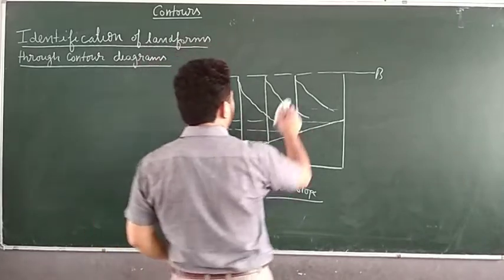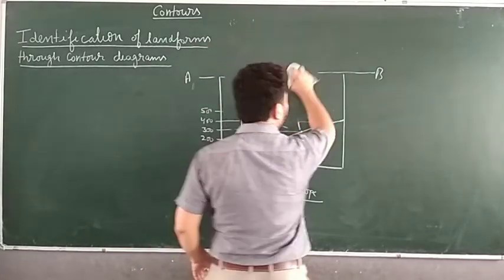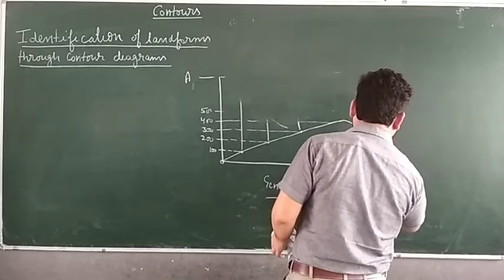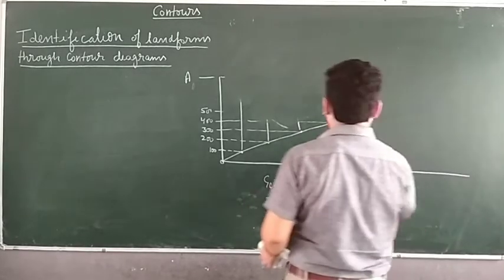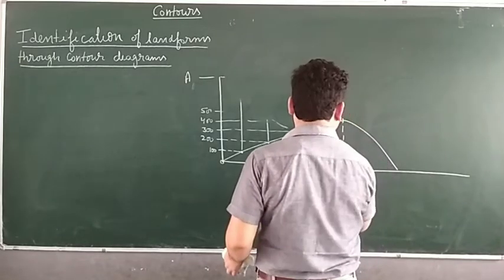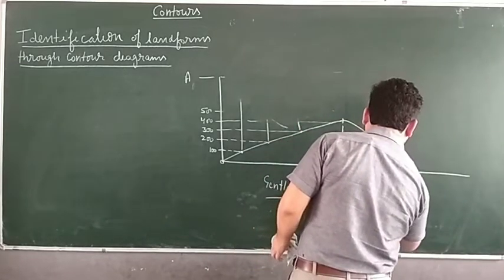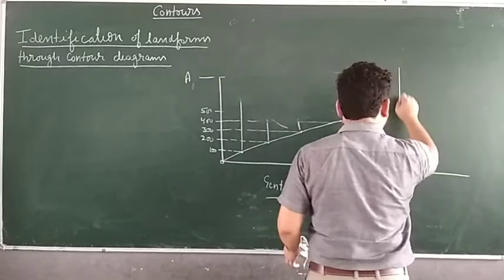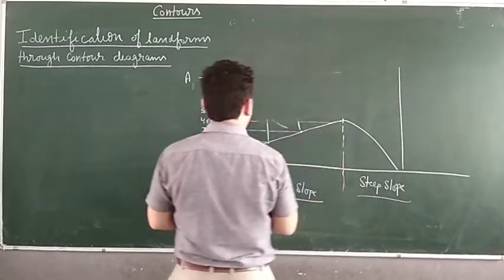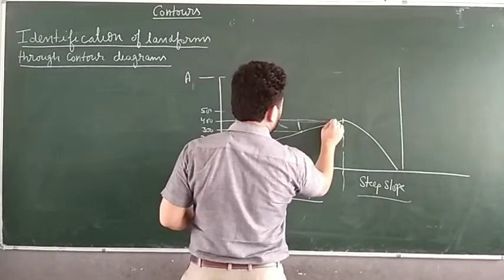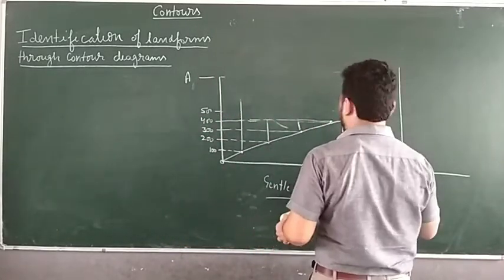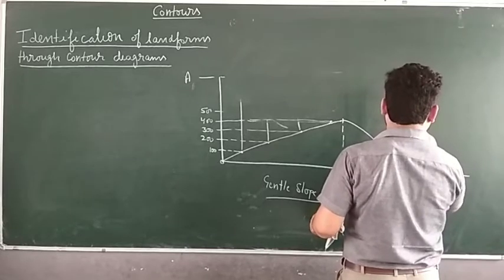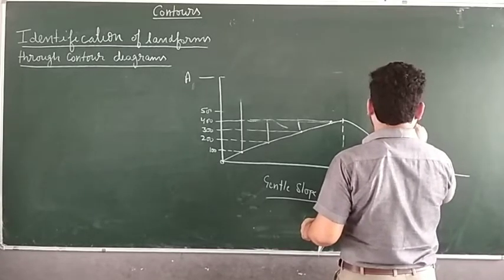This is for gentle slope. Now suppose if I am doing this — this is half of the picture — this side is gentle slope and this will be steep slope. I have taken two examples in just one picture to make it more clear. Here we take 100, 200, 300, and 400 on the steep slope side as well. The height should be the same: 100, 200, 300, 400.